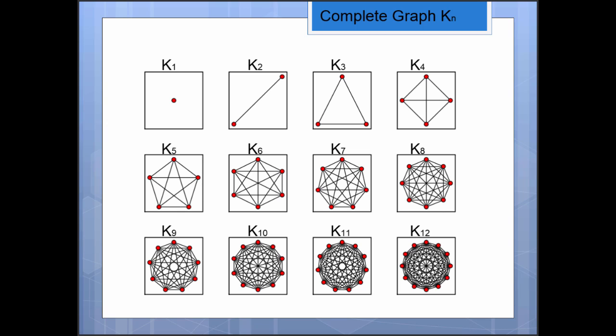The complete graph in general can have n vertices. So here we have n equals 1 up to n equals 12. And then what you do is you add an edge between every possible pair of vertices. So in the case of K1, that's really boring.